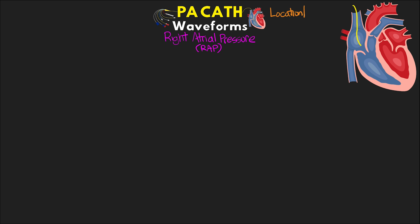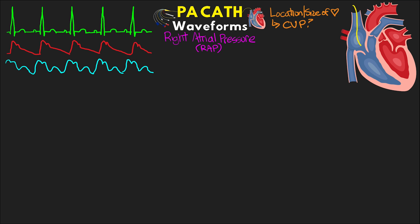Depending on the location of the catheter as well as the size of the heart, we may actually be reading a CVP, but for all intents and purposes these are going to be the same measure. This is basically the same waveform that we're going to see when we're transducing the distal port of a central line to get our central venous pressure, or CVP. Here's an example of a right atrial pressure corresponding with an ECG, CVP, and an arterial pressure tracing, which we'll use as reference as we go through the different parts of the waveform.